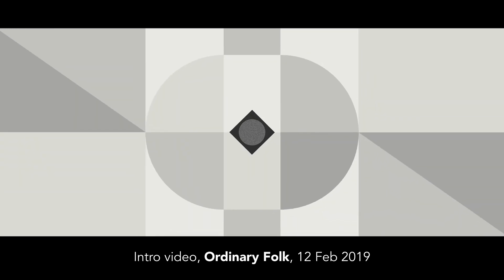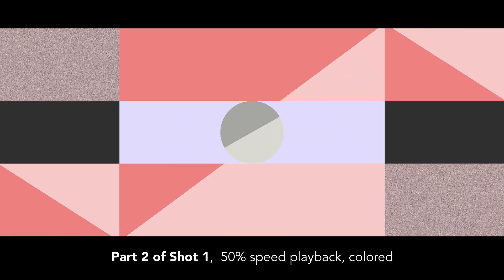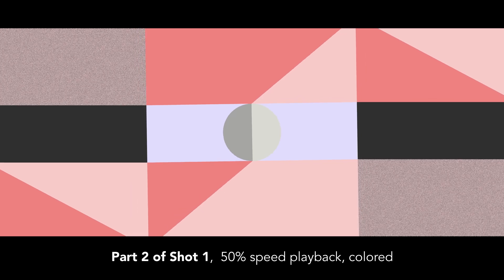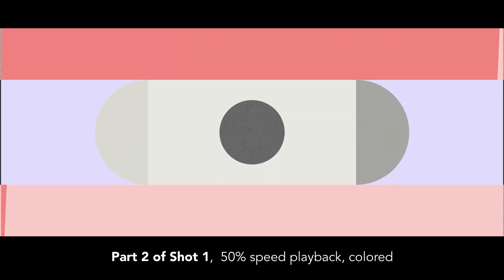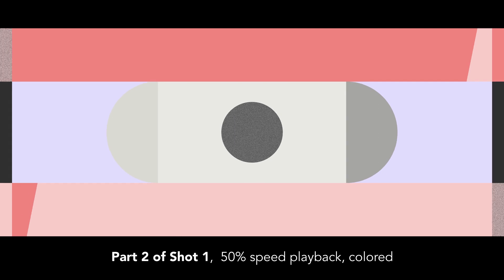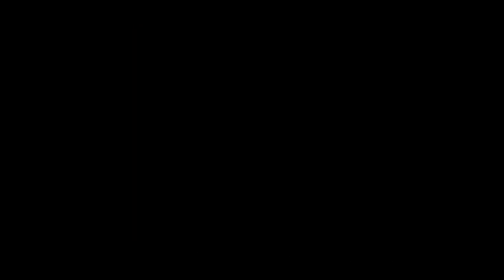Here we have the reference scenes we'll be replicating today. What do you observe? As you can see, the pattern scales down in the Y axis, and then compresses in the X axis. As it becomes smaller, we have the triangle revealing, and it rotates as it scales down further. This is the pattern we'll be building and animating today. And that's all for the analysis.